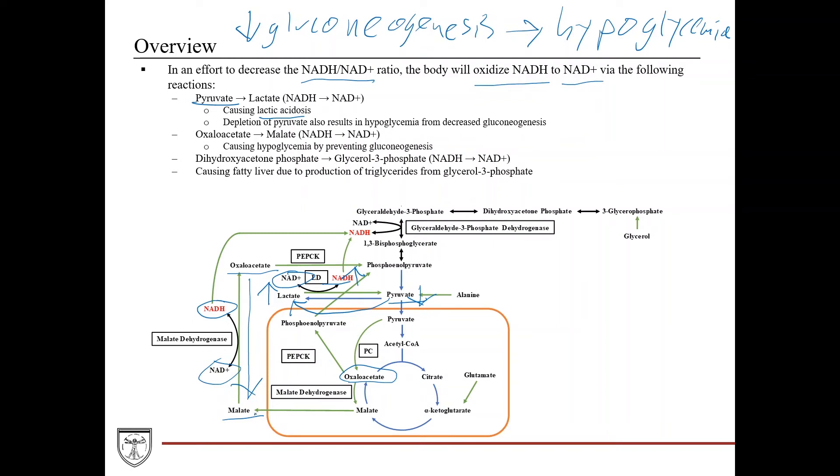And again, this is the reverse of gluconeogenesis, which again would further decrease the flux of gluconeogenesis. And then the other reaction here that's affected is dihydroxyacetone phosphate actually gets converted back to glycerol-3-phosphate because this also uses up an NADH to give you an NAD+.